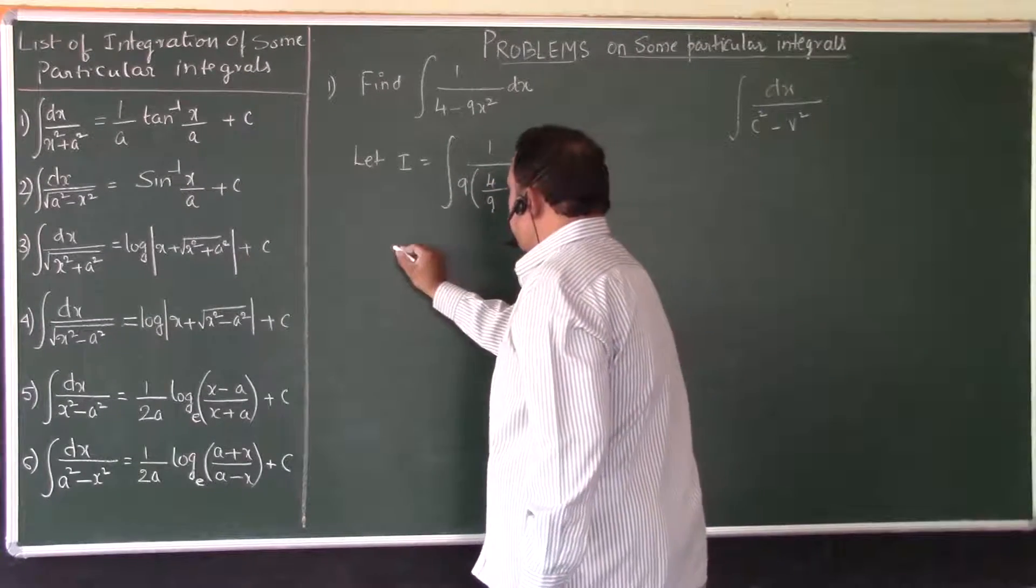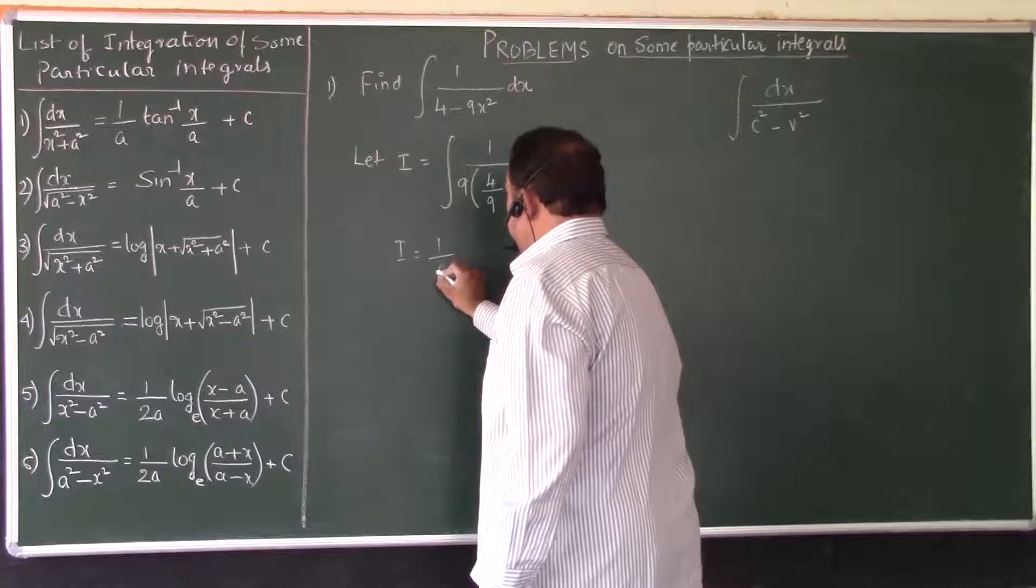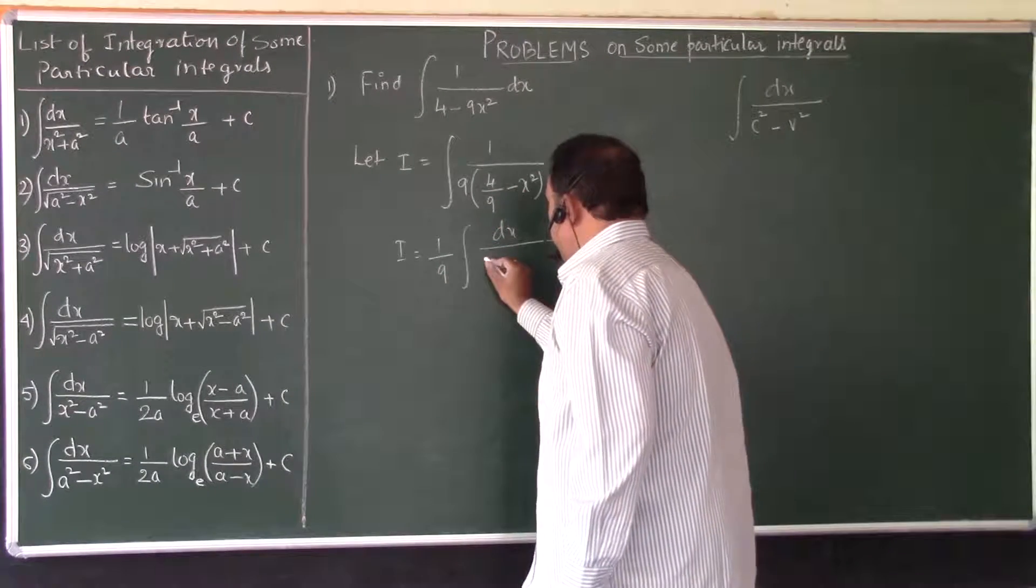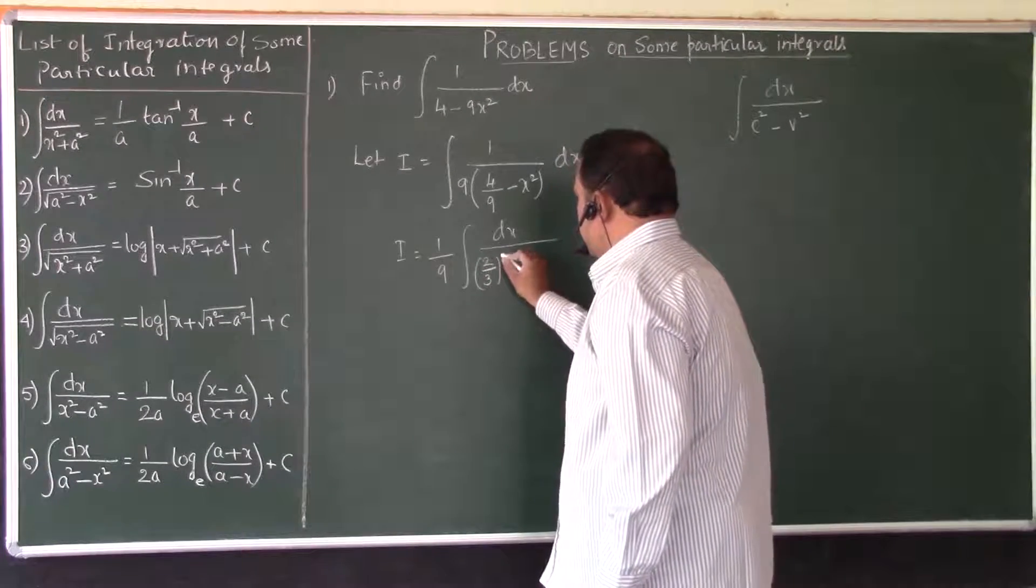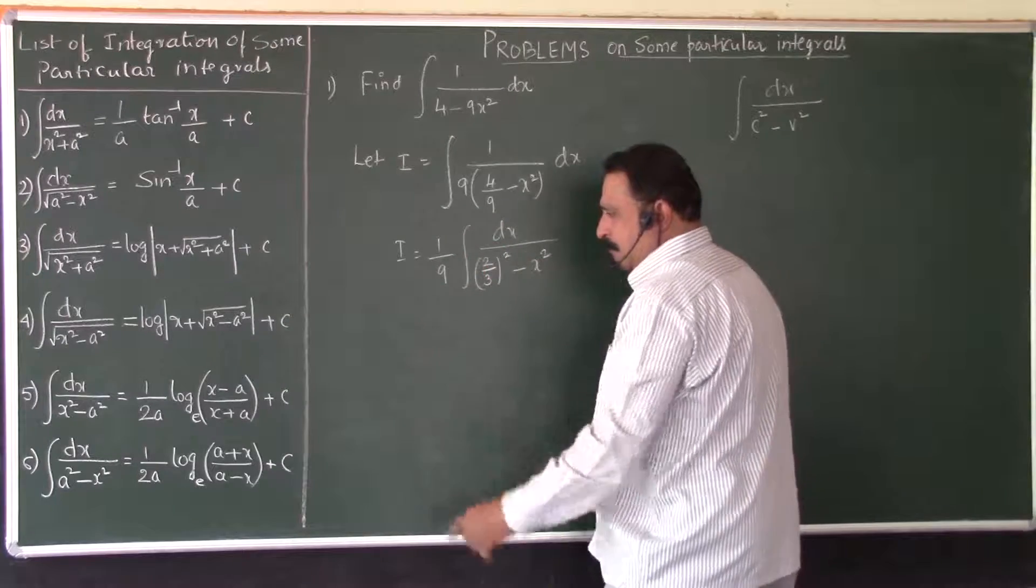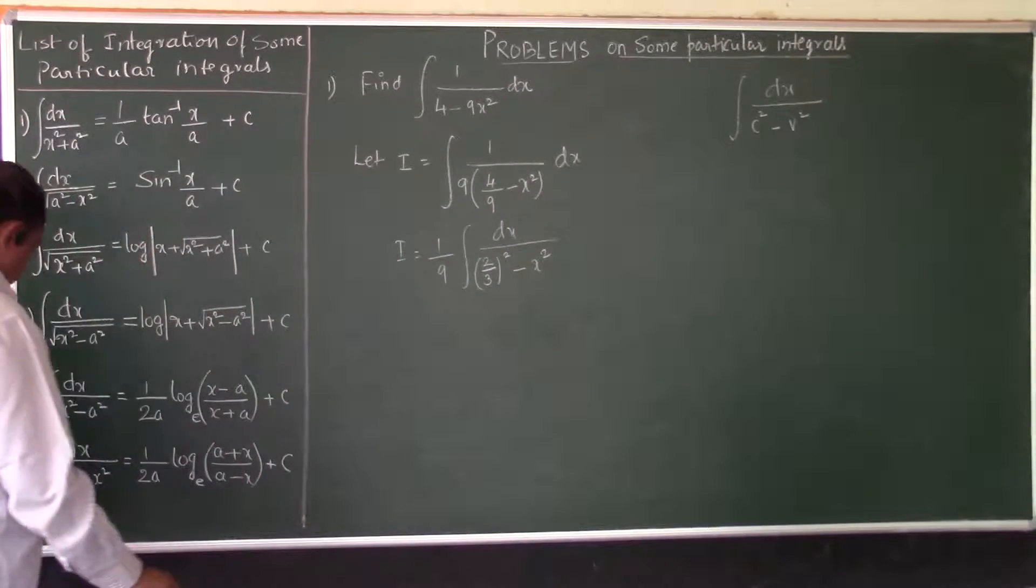Now 1 by 9 is a constant, keep it outside the integral sign, dx by 4 by 9 can be written as 2 by 3, the whole square minus x square. Now this problem matches 100 percent with this formula.